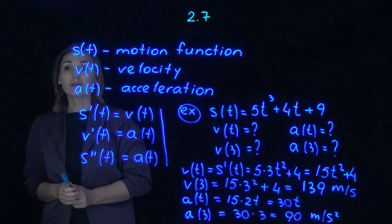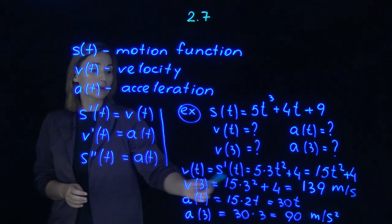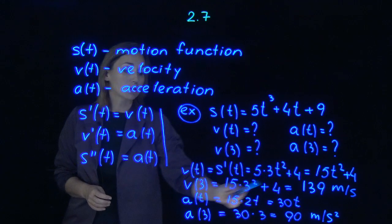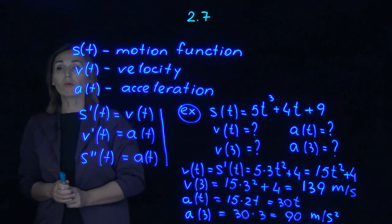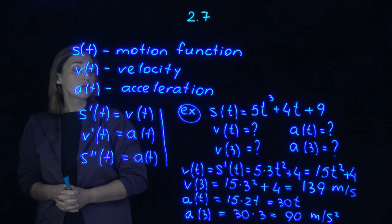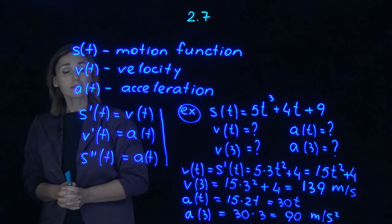Then you need to evaluate velocity at 3. So plug in 3 to this expression. 3 squared will give you 9, so altogether the value will be 139. The given units are meters and seconds, so it's going to be meters per second.